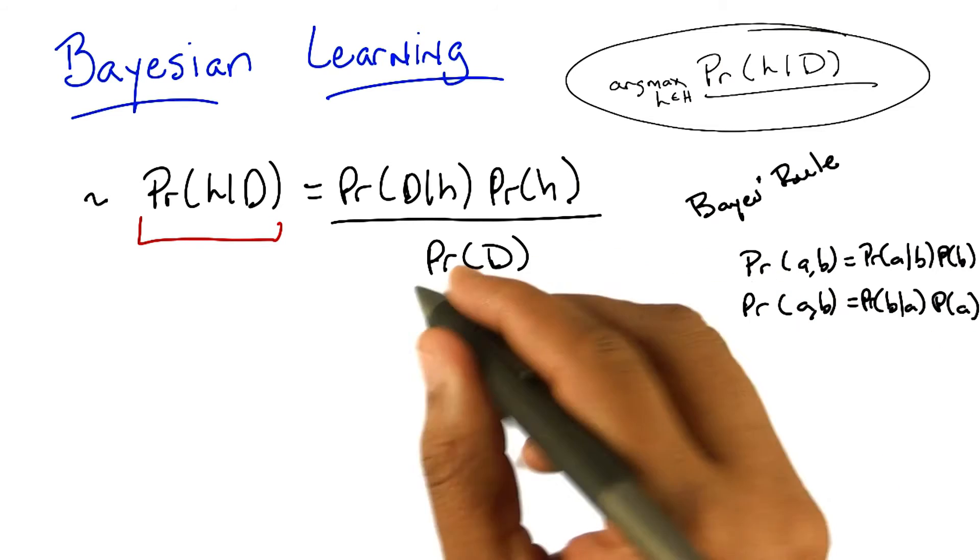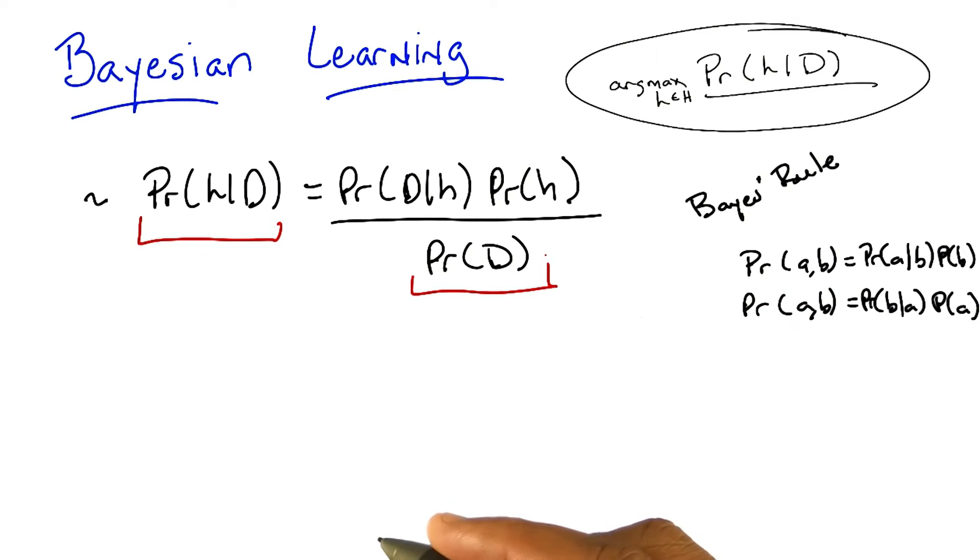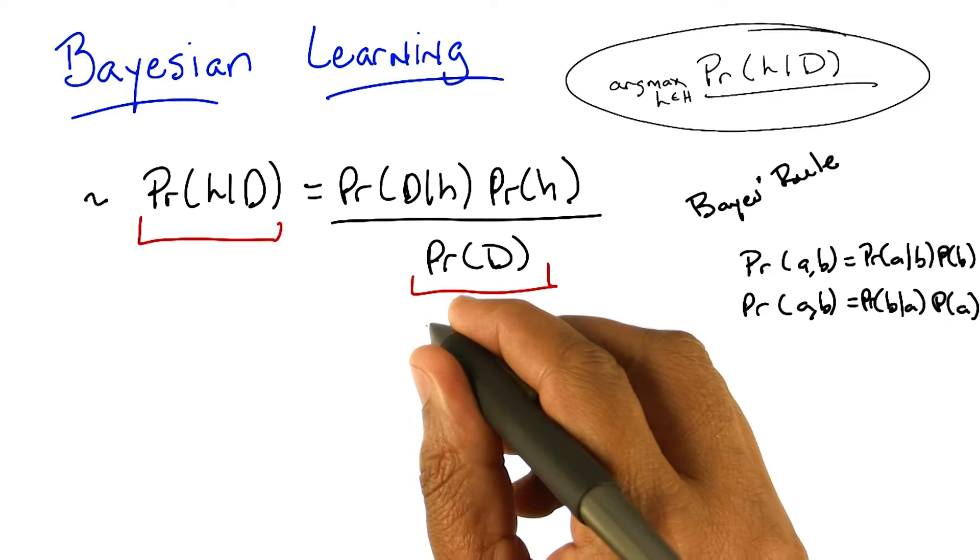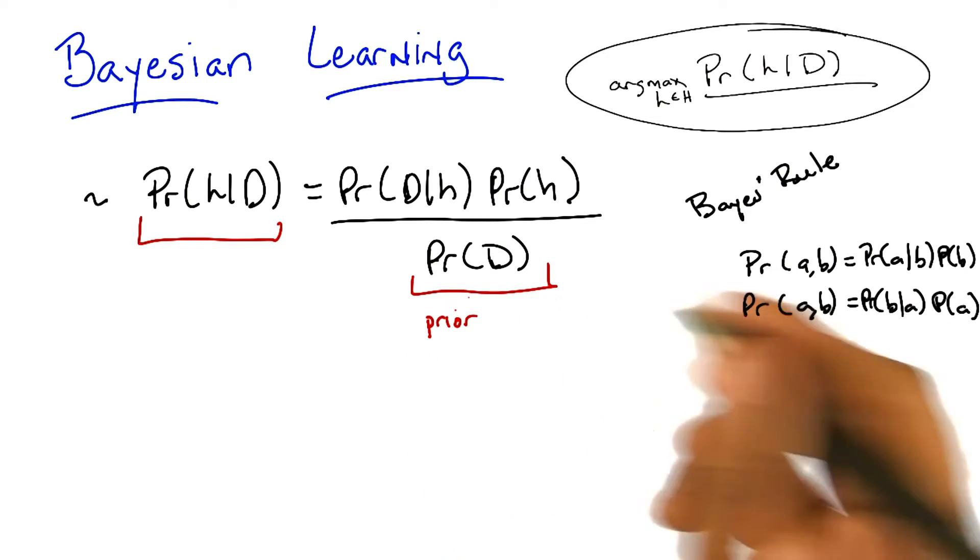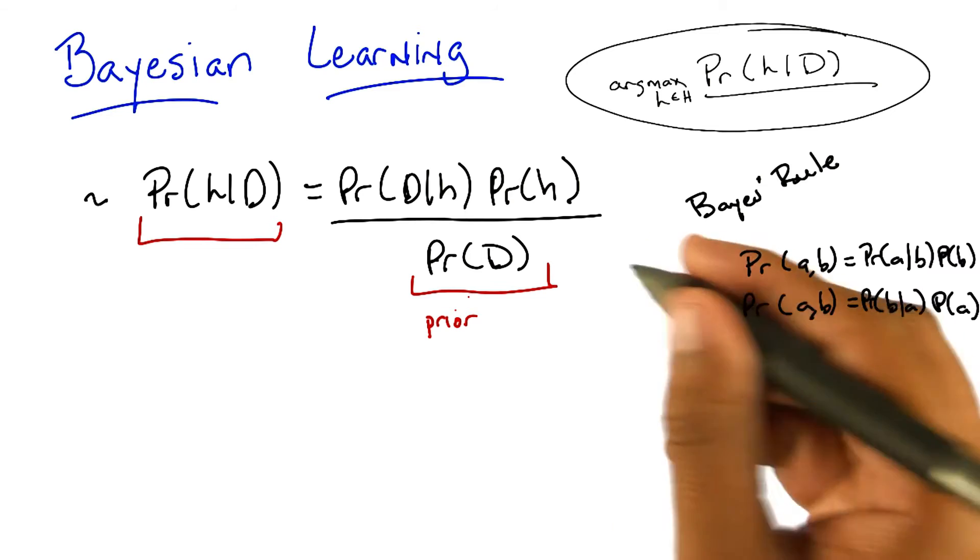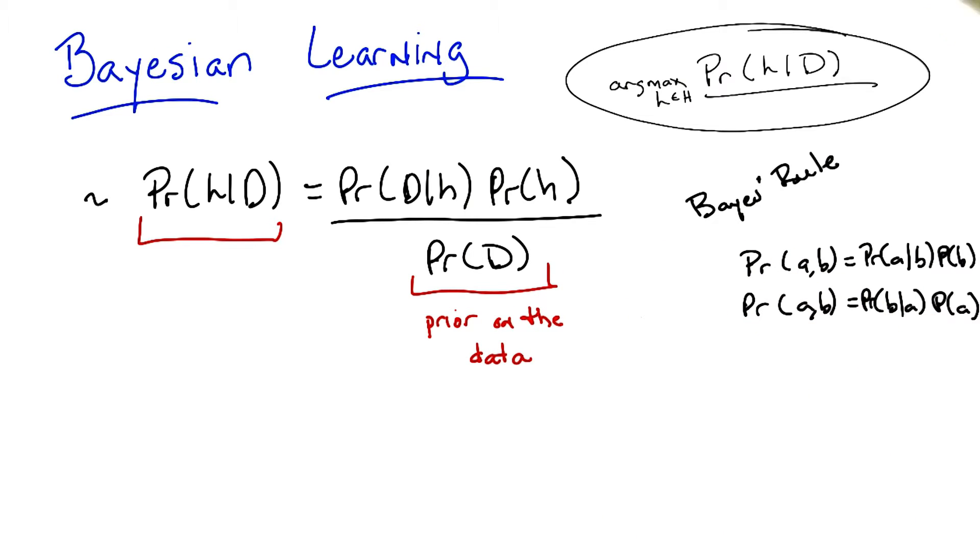I want to start with this term, the probability of the data. It's really nothing more than your prior belief of seeing some particular set of data. Now, as you point out, Michael, often this just ends up to be a normalizing term and typically does not matter. Though we'll see a couple of cases where it does matter. But generally speaking, whatever it is, since the only thing that we care about is the hypothesis, and we're trying to find that, the probability of the data doesn't depend on the hypothesis, so typically we ignore it. But it's nice to just be clear about what it means.